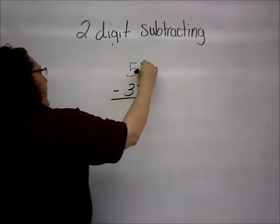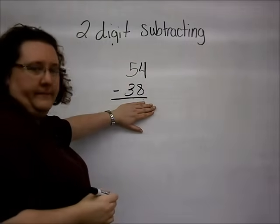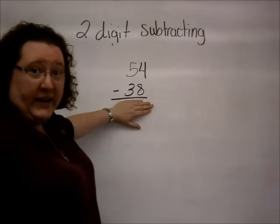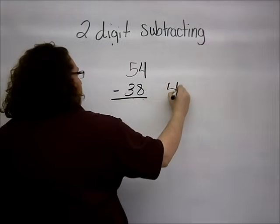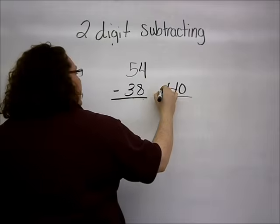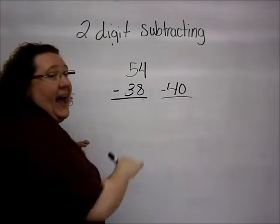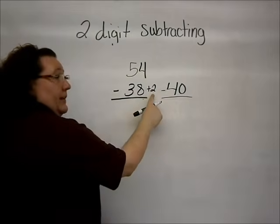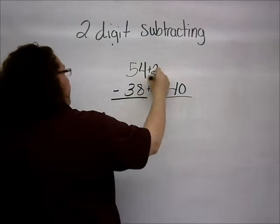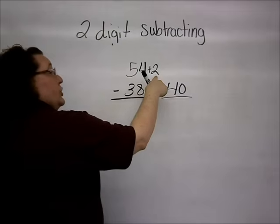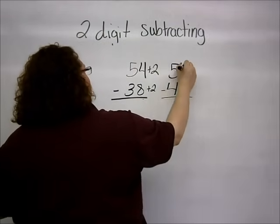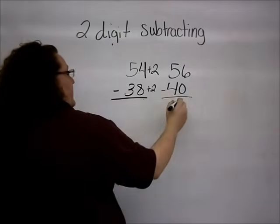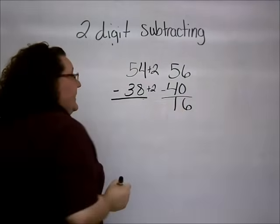So, again, we are going to start by looking at the bottom number. 38 is almost 40, and we want to go up. So, I am going to use 40. And to get to that 40, in this case, I added 2 more. So, since I added 2 to my bottom number, I am also going to add it to the top number. So, 54 plus 2 is 56. And when I subtract, I end up with 16.